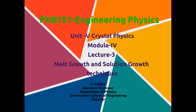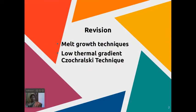In Lecture 2, we discussed in detail about the melt growth technique. In melt growth, the process of crystallization is achieved by making a transition from liquid phase to solid phase. Melt is the liquid form of the material to be crystallized. In the last class we also discussed the low thermal gradient Czochralski technique.